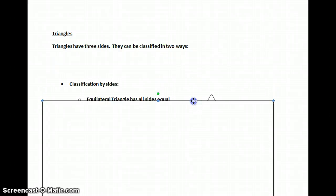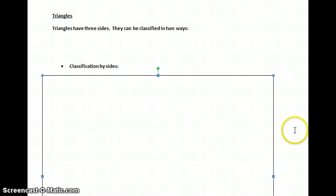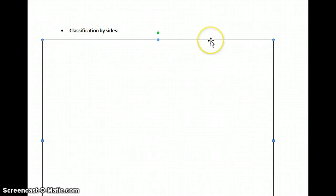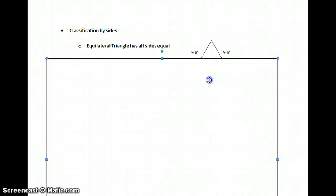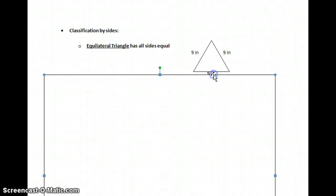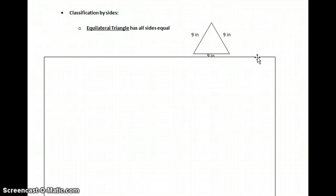Our first way to classify it by its sides is called an equilateral triangle. All sides are equal, so it almost has the prefix equal in it—equilateral, equal sides.